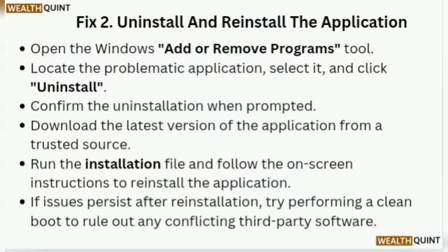Fix 2: Open the Windows Add or Remove Programs tool. Locate the problematic application, select it, and click Uninstall. Confirm the uninstallation when prompted. Download the latest version of the application from the main trusted source, run the installation file, and follow the on-screen instructions to reinstall the application. If issues persist after installation, try performing a clean boot to rule out any conflicts with third-party software.